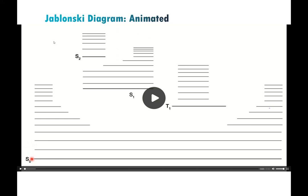In this Jablonski diagram, each horizontal line is an energy level. The bottom line is S0, our ground state. We also show S1 and S2 — two higher singlet excited states — and one triplet excited state, T1. The closely spaced gray lines represent vibrational energy levels within each electronic state. S0 has its lowest vibrational level and several above it; S1, S2, and T1 similarly each have a series of vibrational levels.